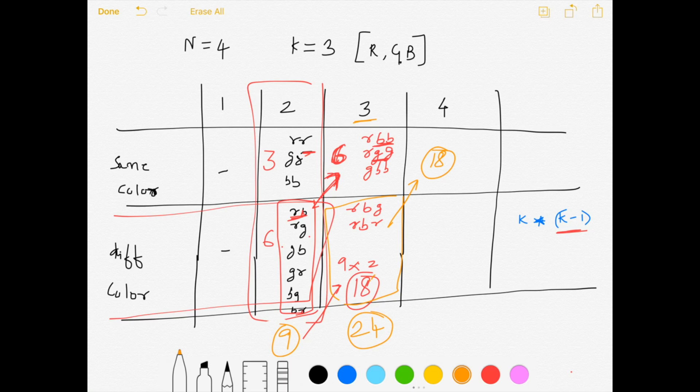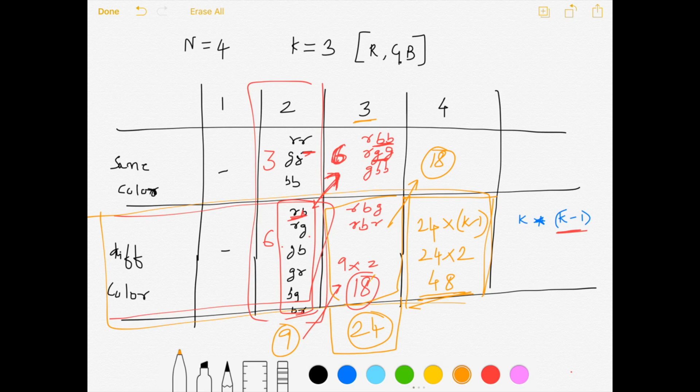Now we need to find out the different color combination for post four, which is the total number of combinations from the previous post, which is 24. And then multiply it by K minus one, which is 24 into two, 48. So that's the total combination for this scenario with four posts. And if I want to find out the total number of combinations for post four, it would come down to 66. So this is my final answer.